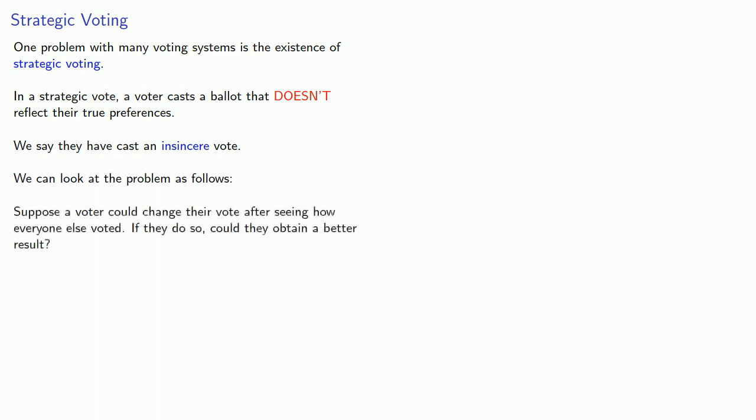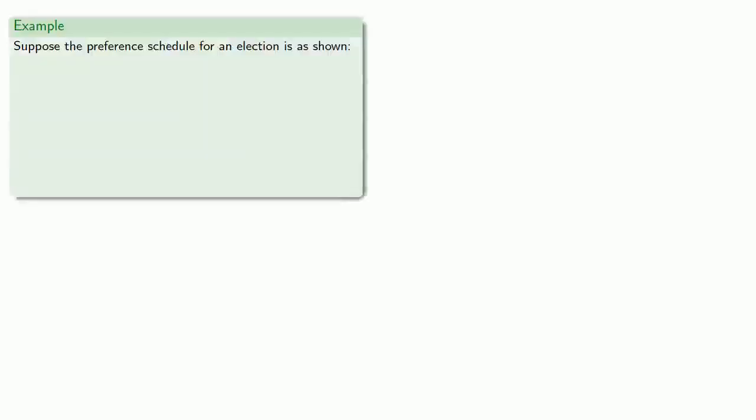Suppose a voter could change their vote after seeing how everyone else voted. If they do so, could they obtain a better result? Now, why would anybody submit a vote other than what they really wanted? Well, let's take a look.